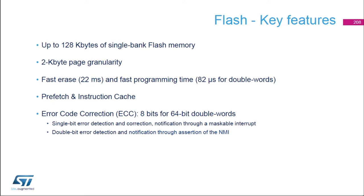The main flash is split into 2K pages that can be independently erased. Mass erase is also supported. Flash memory access may require wait states according to the actual CPU frequency. To reduce the latency, the flash controller embeds both an 8-byte prefetch buffer and a 16-byte instruction cache. An 8-bit ECC code is appended to the double word to program. It is checked on read to detect and correct single-bit errors and detect double-bit errors.